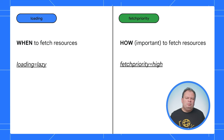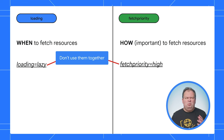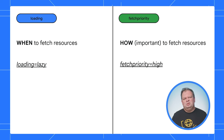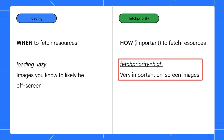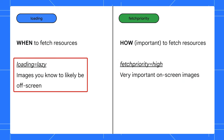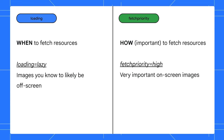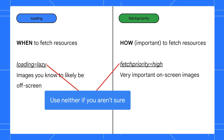In reality, you probably wouldn't want loading equals lazy and fetchpriority equals high at the same time — that would mean don't load it initially, but when you start to load it, load it with high priority, which is kind of contradictory. Images you know to be very important on-screen images should use fetchpriority equals high. Images you know are likely to be off-screen should use loading equals lazy. Images that are not super important and may or may not be on-screen should have neither attribute.